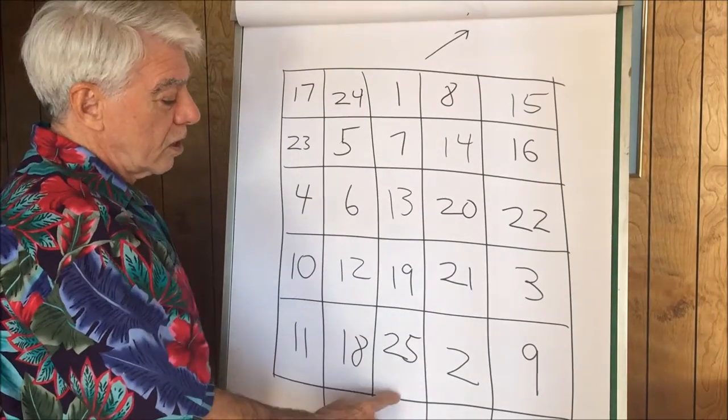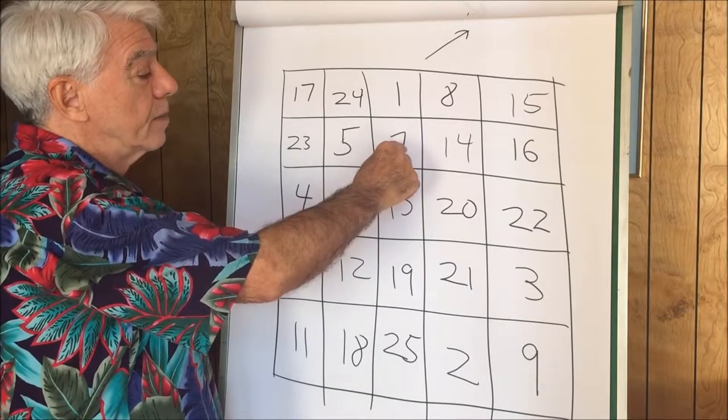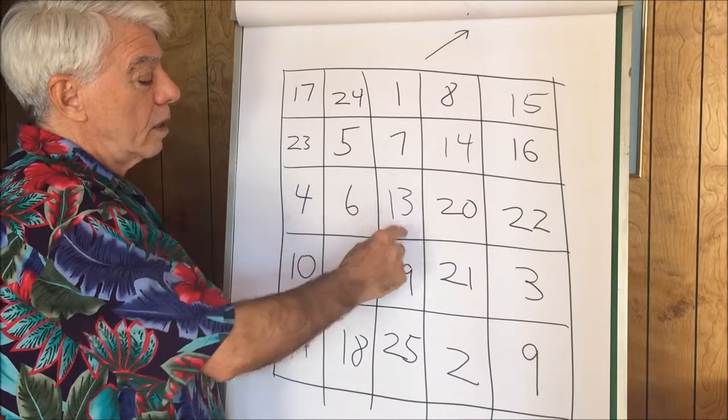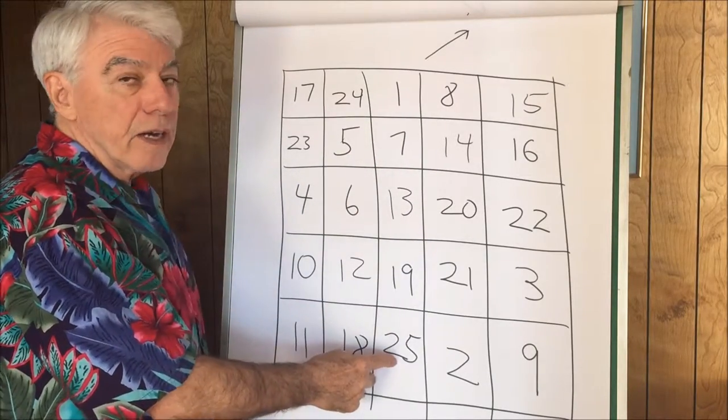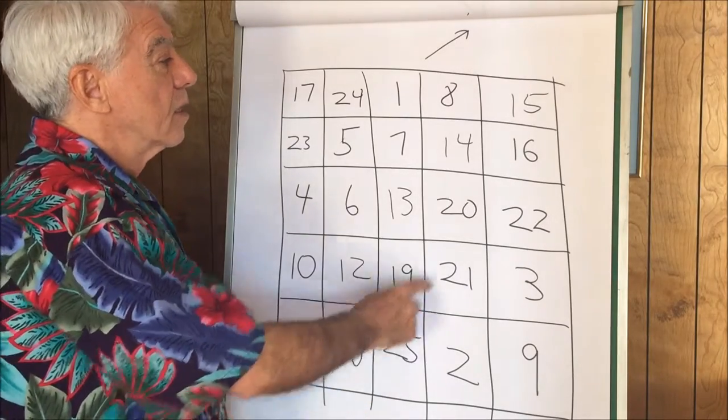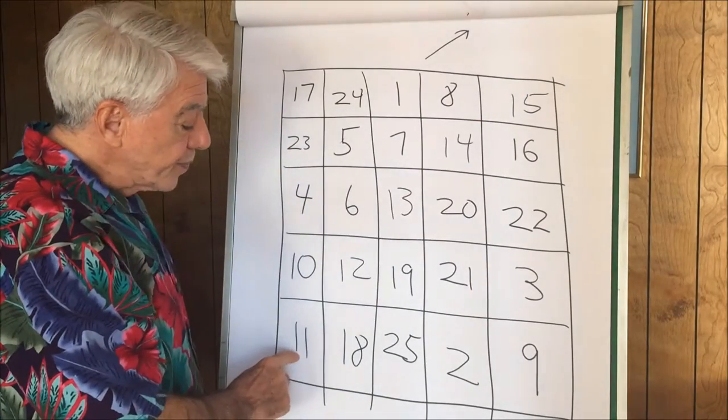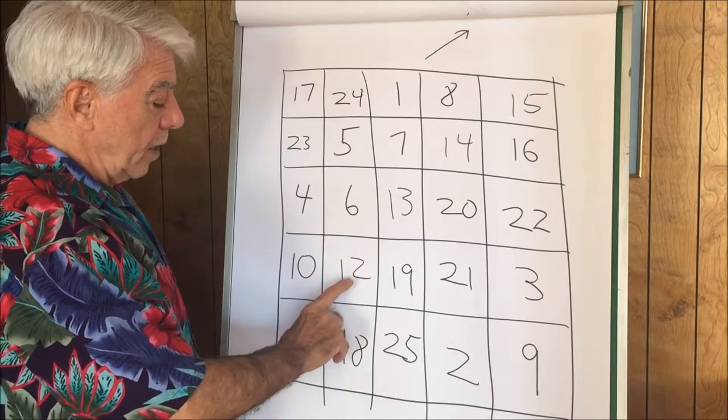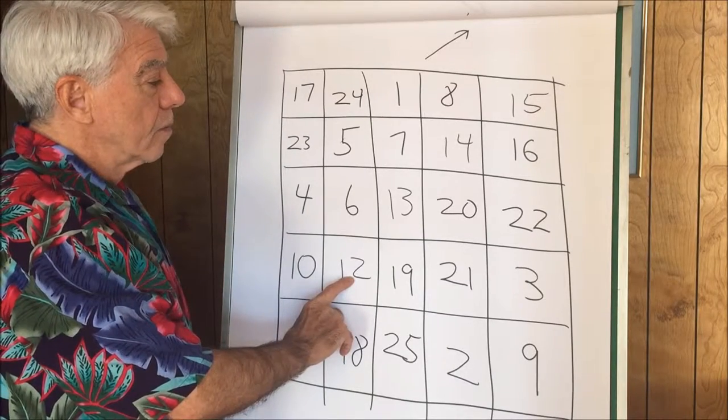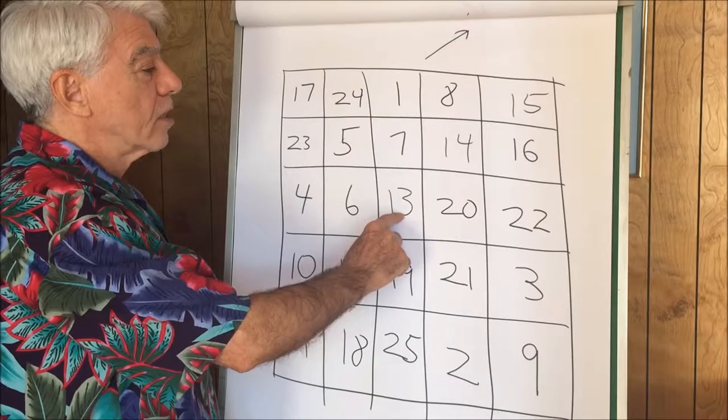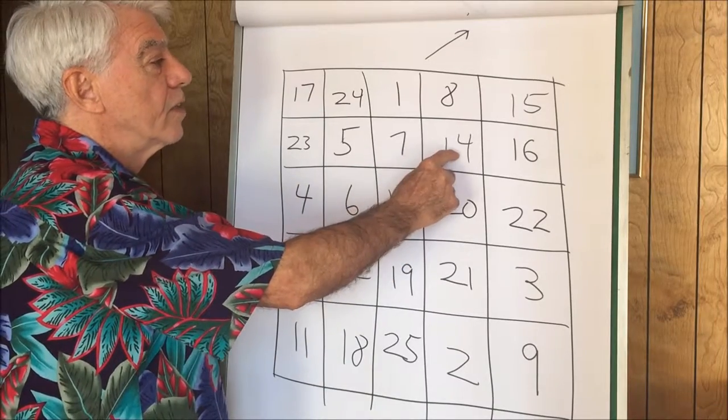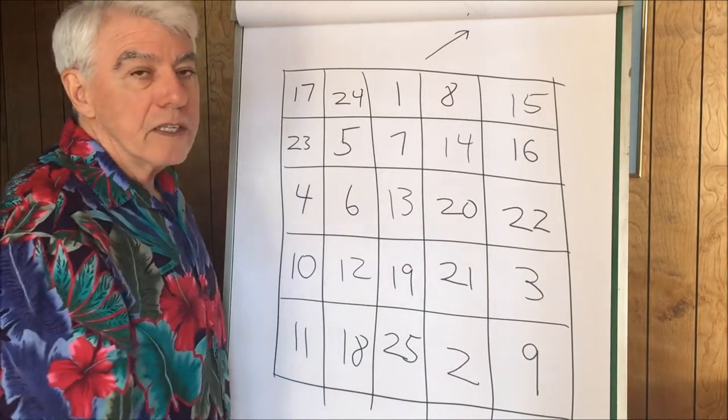Let's add up this center column. Let's see: 8, 21, 40, plus 25, 65. Let's do this diagonal. All right, we have 23, 36, 50, plus 15, 65.